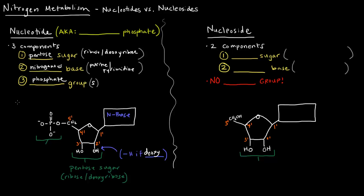The third component is the phosphate group. I've only drawn one here, but there can be up to three — one, two, or three. Essentially, this is the nucleotide.